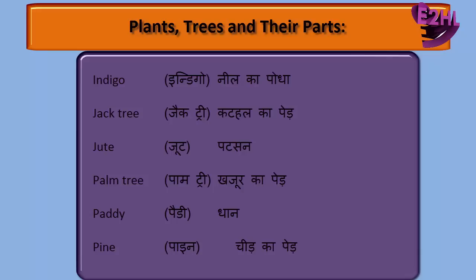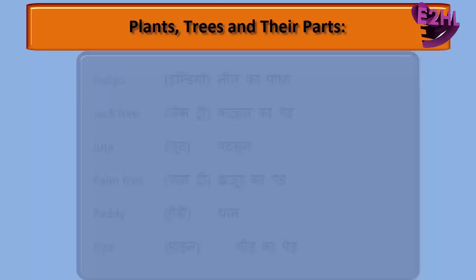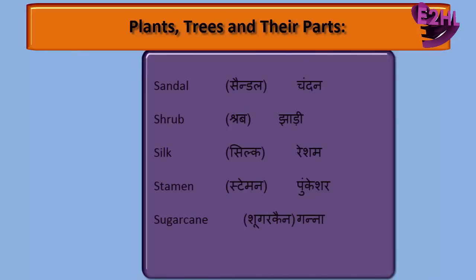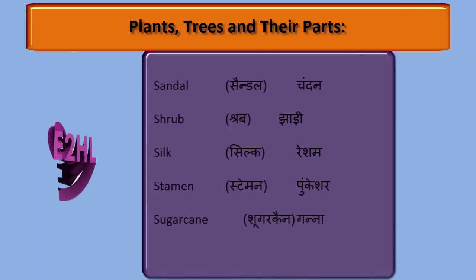Palm Tree — Khajur Kaped. Paddy — Dhan. Pine — Chir Kaped. Sandal — Chandan. Shrub — Jhadi.